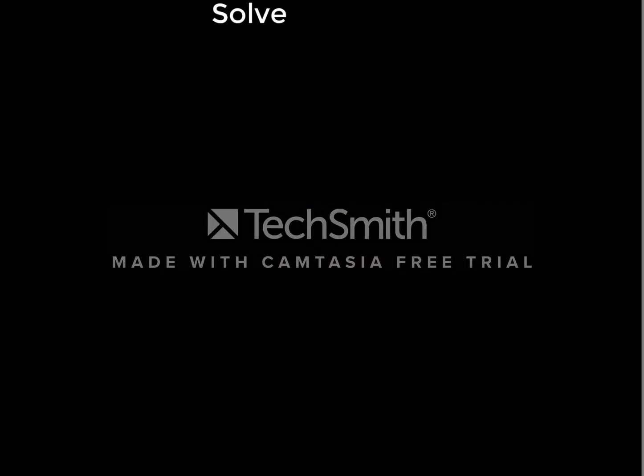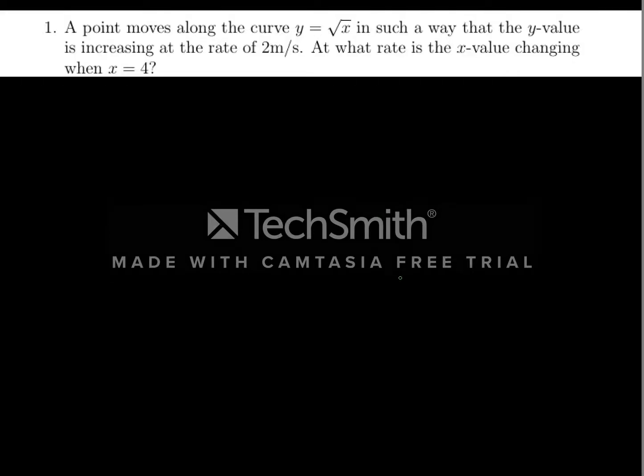So the first problem we look at will be this question, in which we're told a point moves along a curve, y equals square root of x, in such a way that the y value is increasing at a rate of 2 meters per second. And the question here is, at what rate is the x value changing when x equals 4?